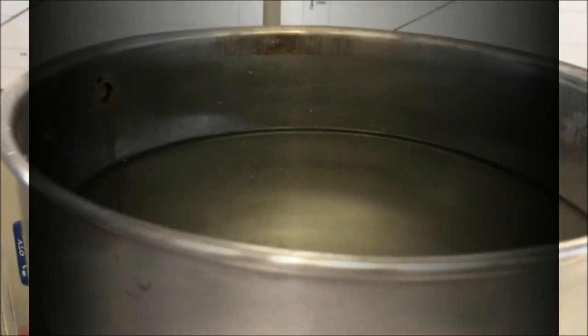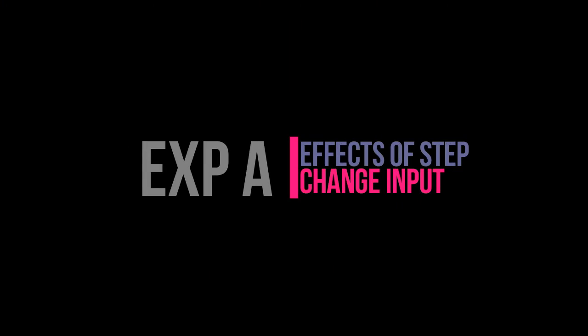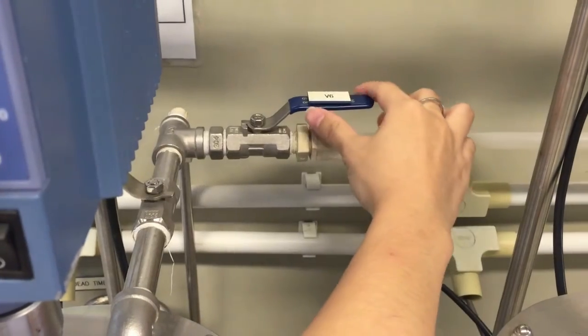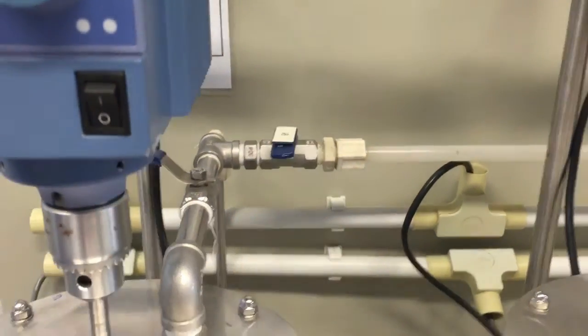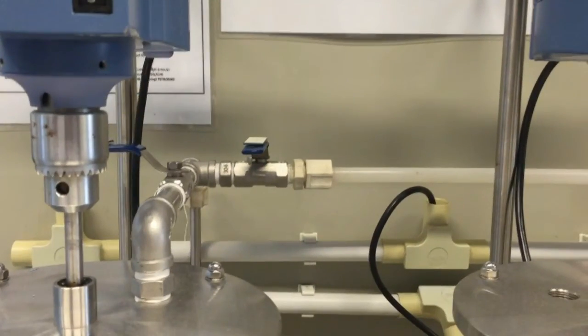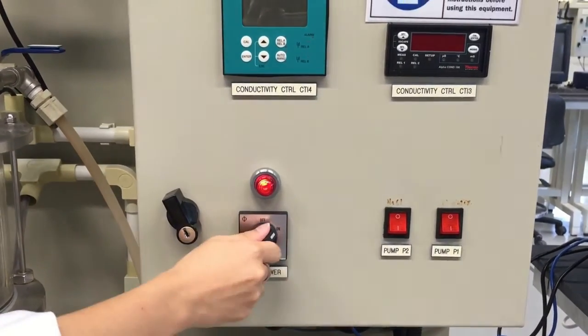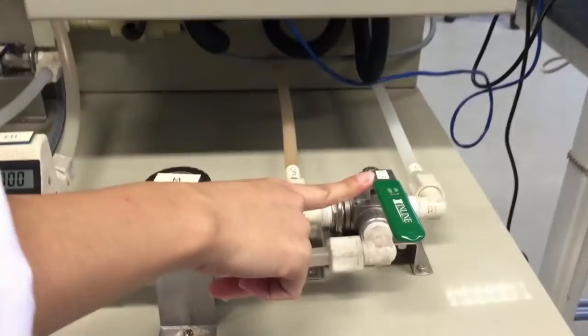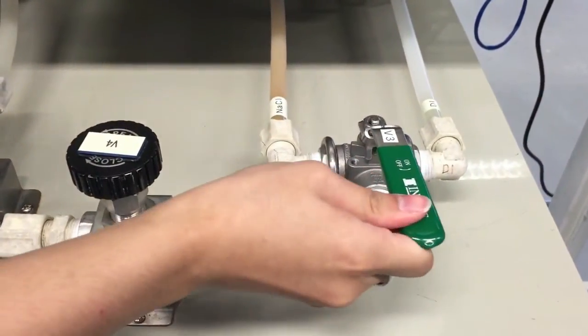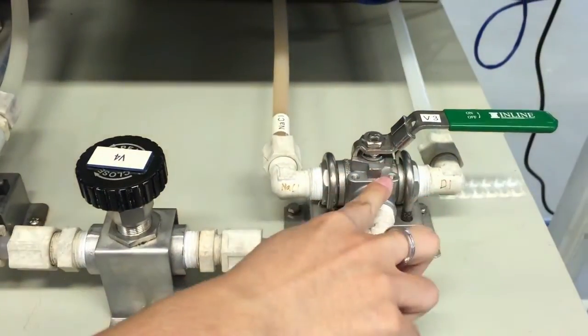Ensure that valve V6 is closed. The main switch is switched on. The position of valve V3 is set towards pump P1.